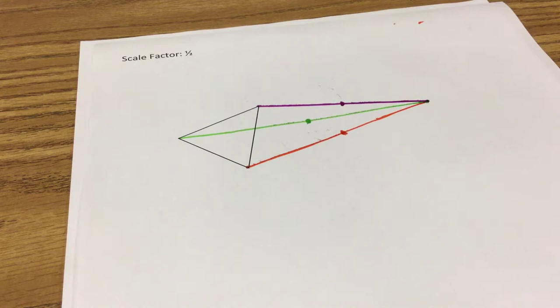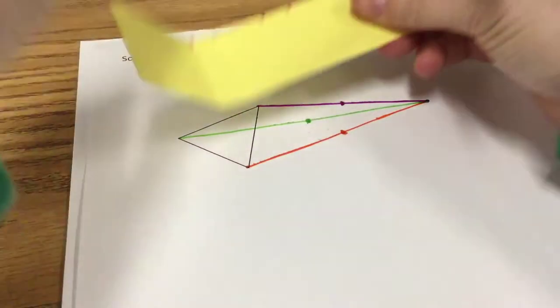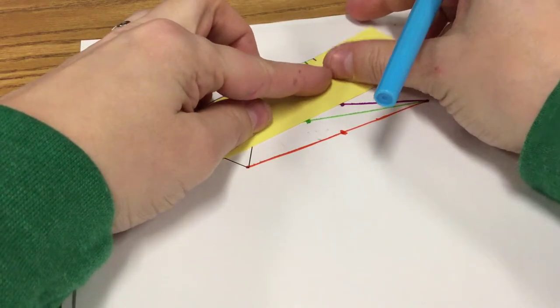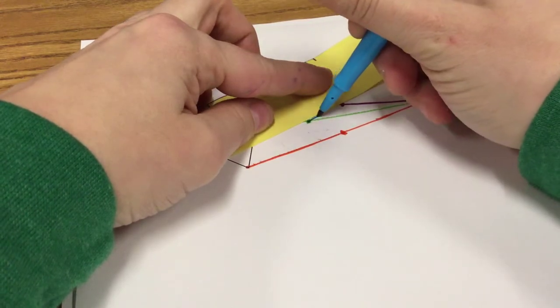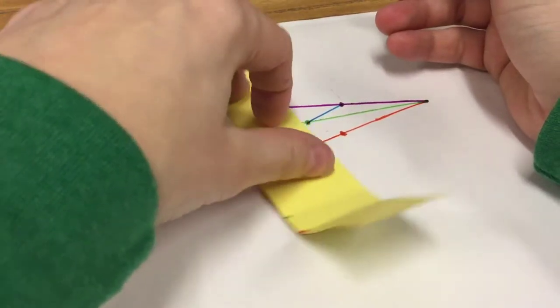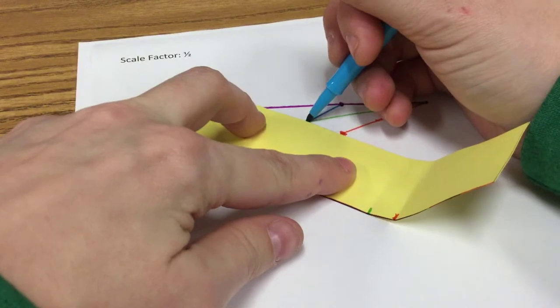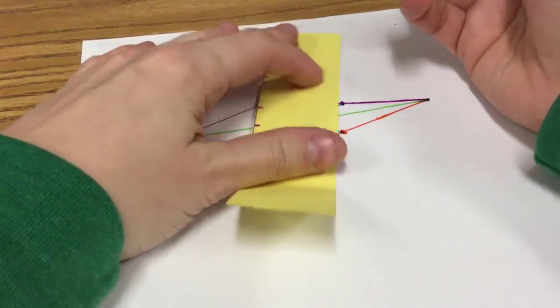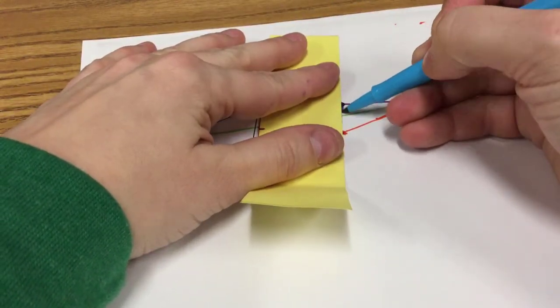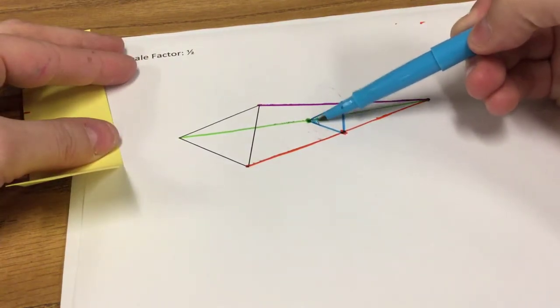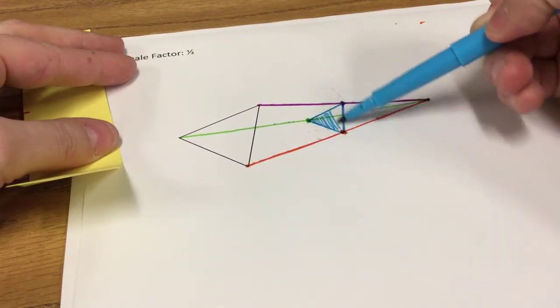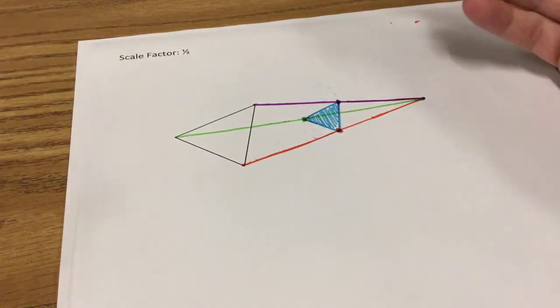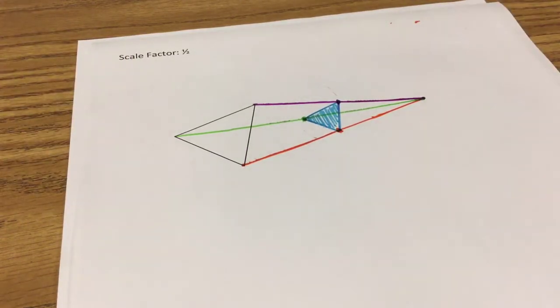Okay, so we have our three vertices marked for our reduction. Let's connect those vertices now so we can see our new figure. Shade it in. Make sure it's easy to see and also so we're communicating clearly with the teacher.